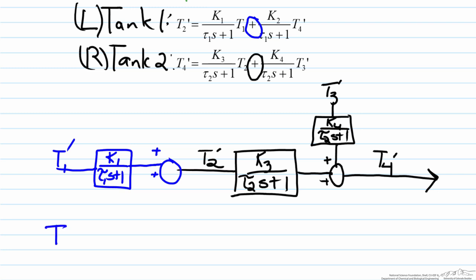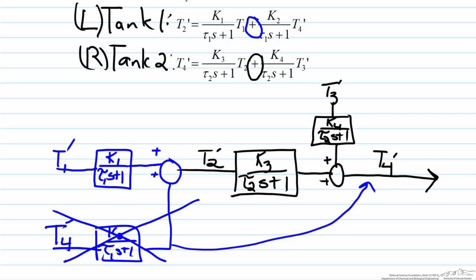This would be incorrect because T4 is already in the process. So this is incorrect. Why? Because T4 is already located here. So you would have to keep everything self consistent with one another in order to mathematically appropriately represent the process.